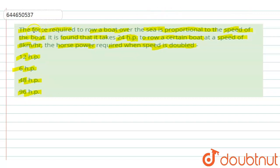In the first line of the question we are given the force required to row the boat is proportional to the speed of the boat.